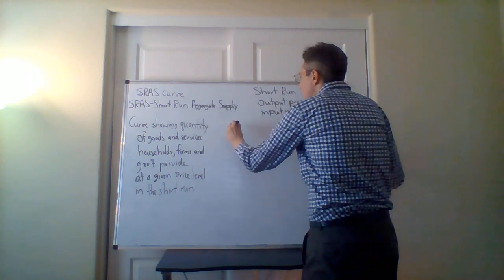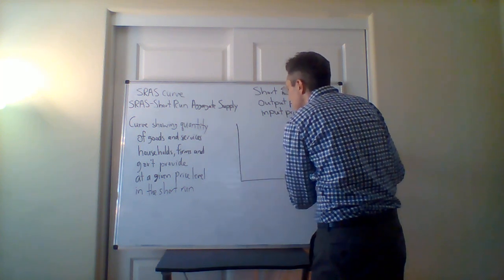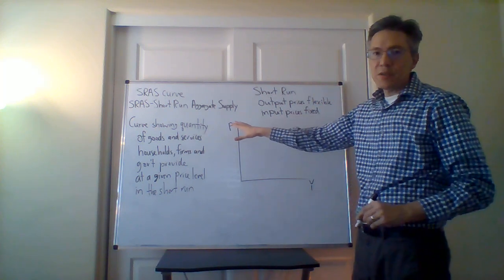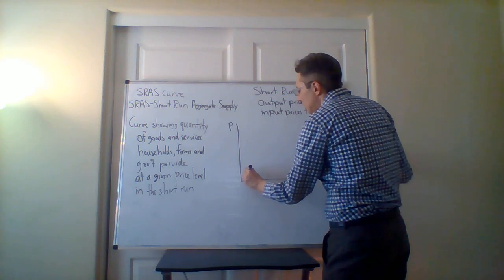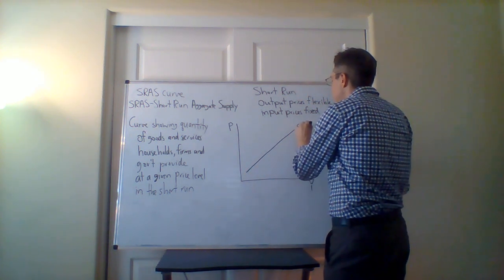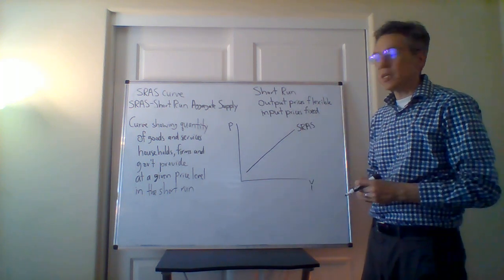So in terms of the short-run aggregate supply, the question is, what does the curve look like? So what we have here is the price level and we have the output as before. And so what the short-run aggregate supply curve looks like is different from the aggregate demand in that it's upward sloping. And so what explains the shape?